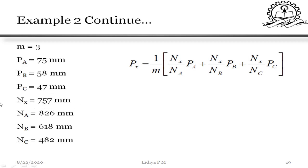Checking the 10 percent limit: comparing NC and NX, we compute (757 minus 482) divided by 757, which gives approximately 36 percent. This exceeds 10 percent, so the arithmetic mean method cannot be used. Therefore, we will use the normal ratio method for calculating the missing data.